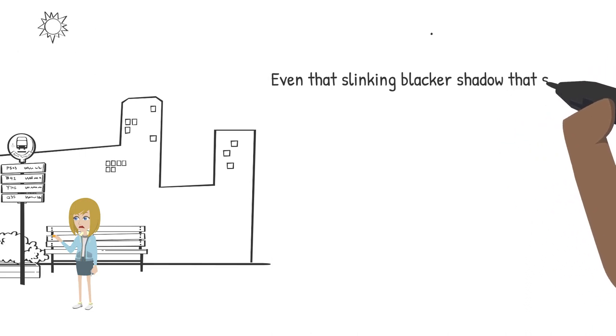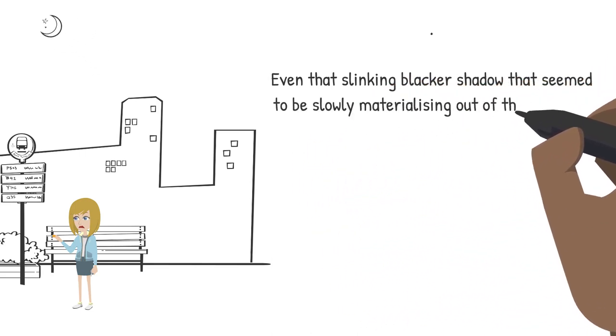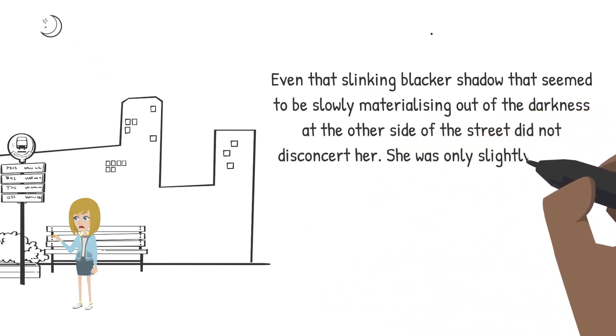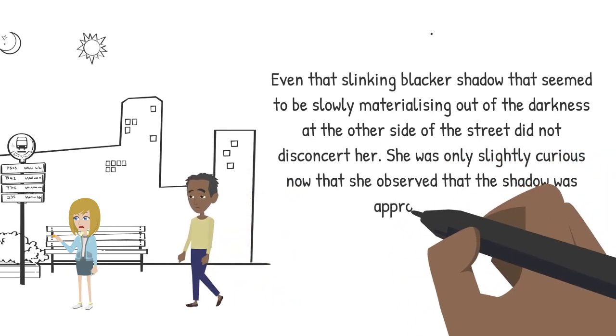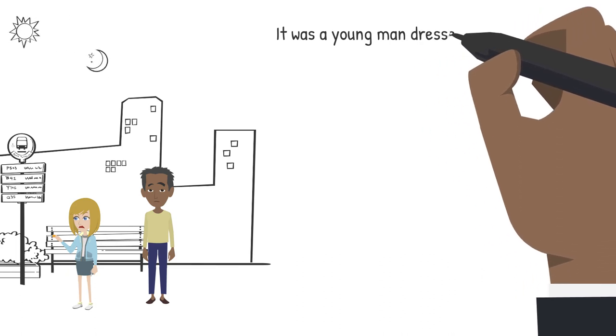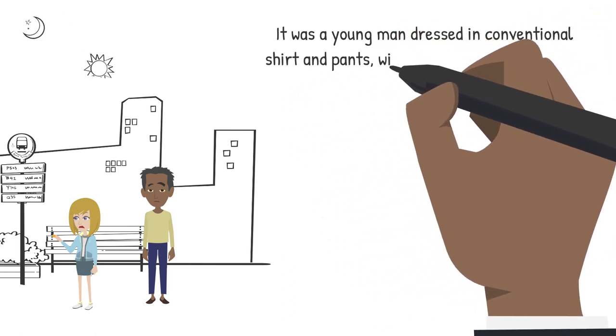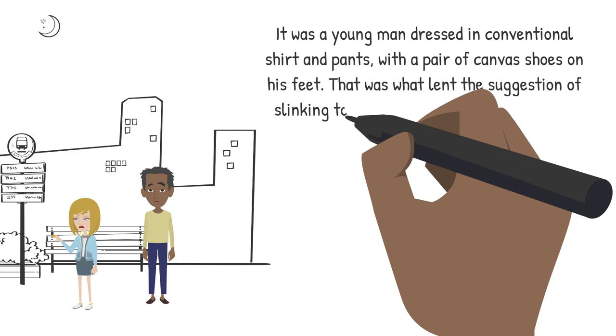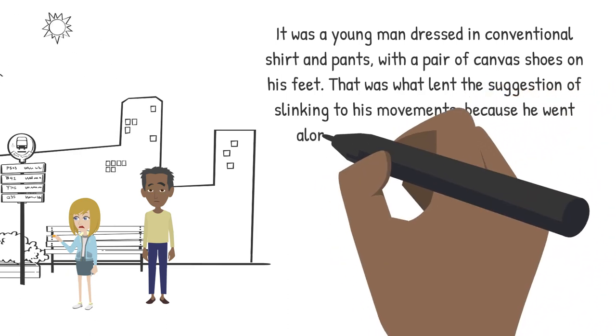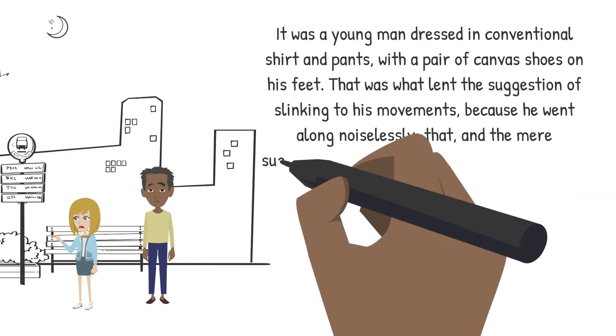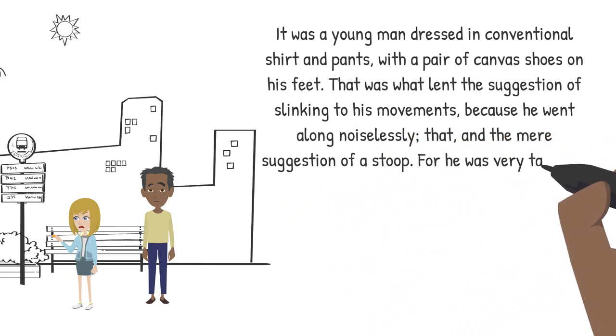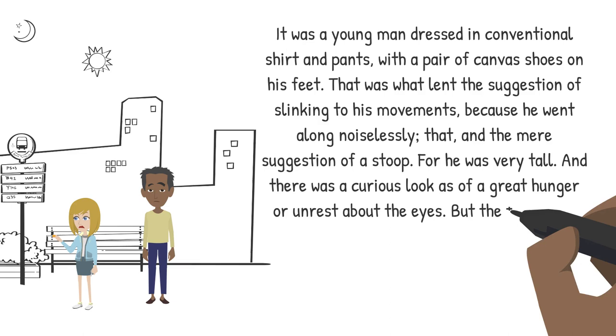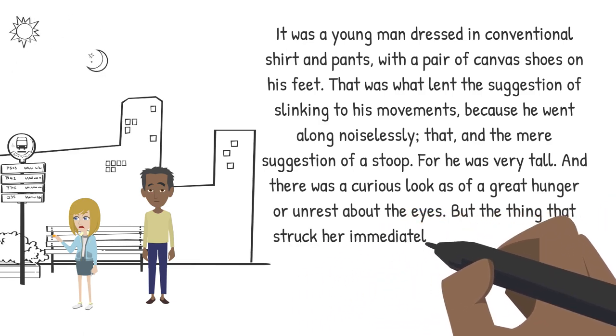Even that slinking blacker shadow that seemed to be slowly materializing out of the darkness on the other side of the street did not disconcert her. She was only slightly curious now that she observed that the shadow was approaching her. It was a young man dressed in conventional shirt and pants with a pair of canvas shoes on his feet. That was what lent the suggestion of slinking to his movements, because he went along noiselessly. That and the mere suggestion of a stoop, for he was very tall, and there was a curious look as of a great hunger or unrest about the eyes. But the thing that struck her immediately was the fact that he was black.